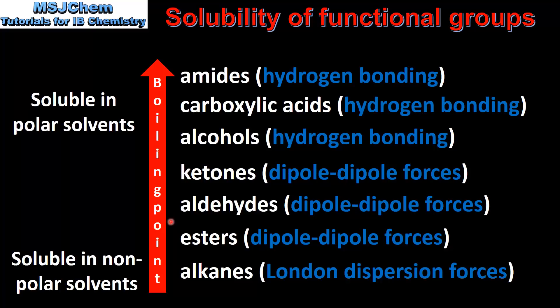Finally, we will have a quick look at the volatility of the different functional groups. As we go from the alkanes up to the amides, the boiling point increases and the compounds become less volatile. Alkanes are the most volatile and amides are the least volatile. The volatility depends on the type of intermolecular forces that exist between molecules. Amides, carboxylic acids and alcohols with their hydrogen bonding are less volatile. Ketones, aldehydes and esters with their dipole-dipole forces are more volatile. Alkanes with their weak London dispersion forces are the most volatile.